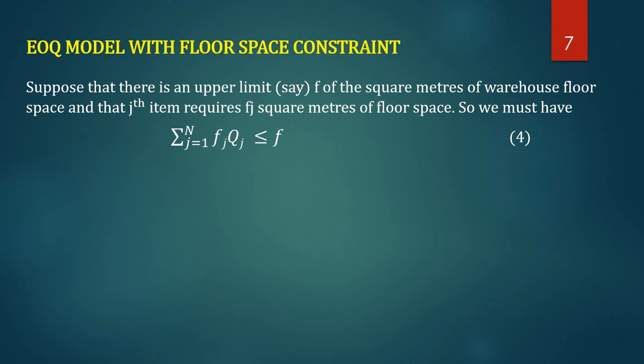Now let us introduce the floor space constraint on the EOQ model. Suppose there is an upper limit F (in square meters) of warehouse floor space, and the j-th item requires fj square meters of floor space. The total floor space required by Qj items is sigma from j=1 to N of fj·Qj, and this must be bounded by F.